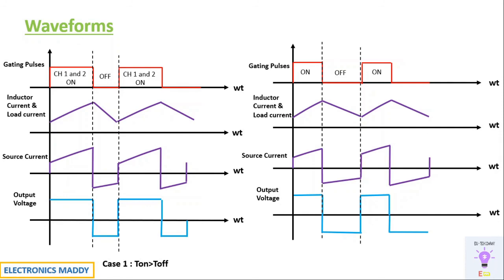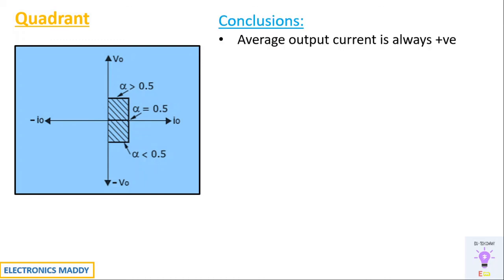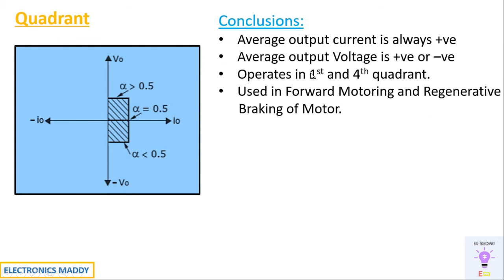The Type D chopper clearly operates in the first and fourth quadrant. Output voltage can be positive or negative, but current is always in the positive direction in both Case 1 and Case 2. The important conclusion: average output current is always positive, average output voltage is positive or negative. Since it operates in the first and fourth quadrant, it can be used for forward motoring or regenerative braking of a motor, and is used in a wide range of industrial applications.